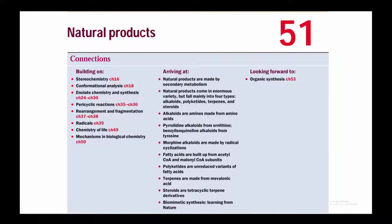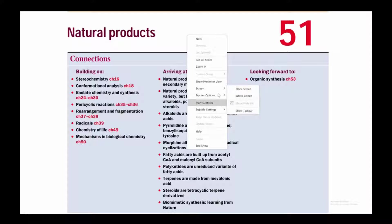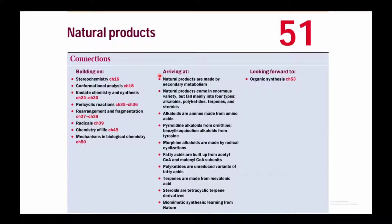Hello everyone. In this video I'll be talking about natural products from chapter 51. The book name is Clayden — Jonathan Clayden is the name of an author who wrote this book about organic chemistry. From that book I'm following chapter 51, and we will be looking at important topics such as natural products made by secondary metabolism, and how natural products come in enormous variety but fall mainly into four types: alkaloids, polyketides, terpenes, and steroids.